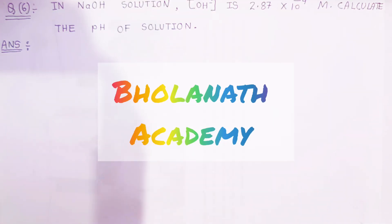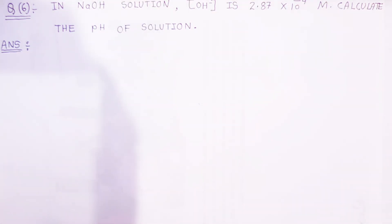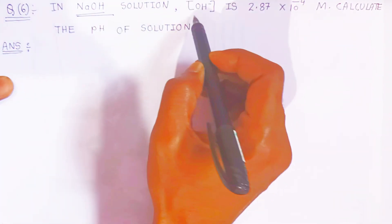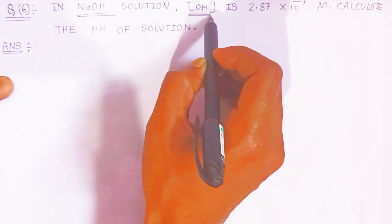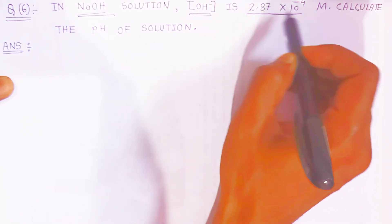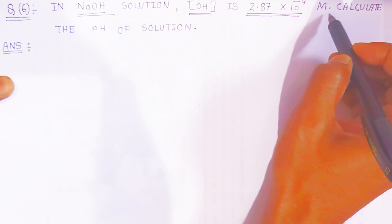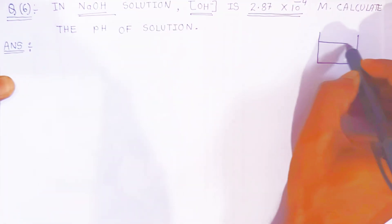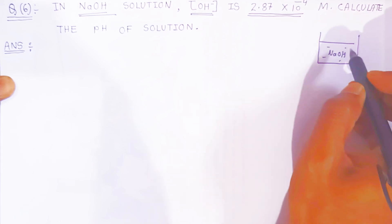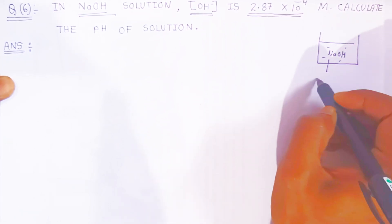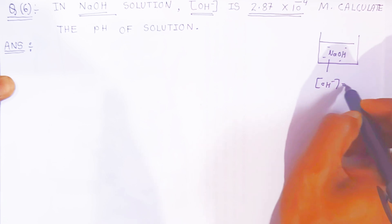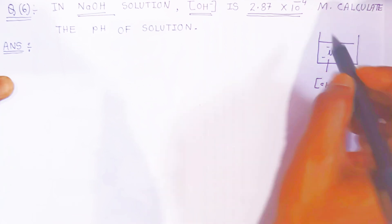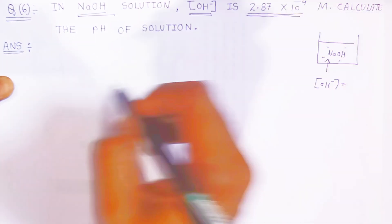Welcome to Bholanath Academy. In this video, we are going to see question number 6. In a NaOH solution, the concentration of hydroxyl ion is 2.87 × 10 raise to minus 4 molar. You have to calculate the pH — what will be the pH of this solution?